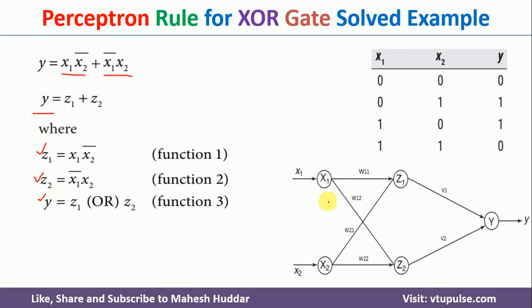This is how the final network will look. X1 and X2 are the two inputs. Z1 and Z2 are the intermediary perceptrons, and Y is the output with the corresponding weights. We need to solve one side at a time and then combine them to get Y.